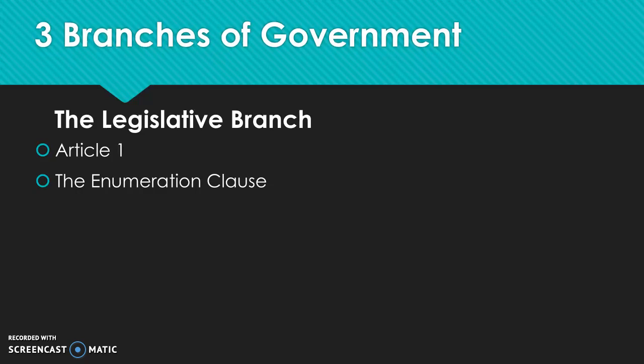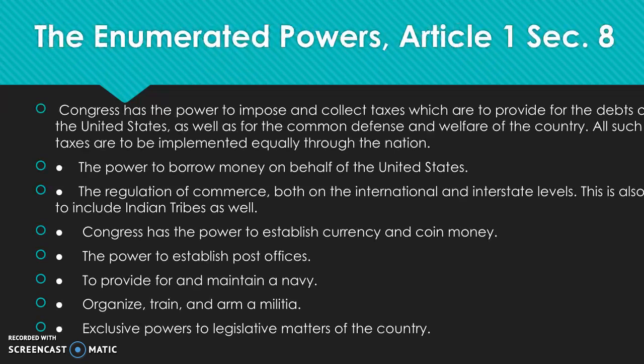We're actually going to start with the legislative branch. The legislative branch is described in Article 1 of the Constitution, and the most important piece that tells us the legislative branch's role is what's called the Enumeration Clause. Article 1, Section 8 of the Constitution gives us the Enumeration Clause, which means it's enumerating — numbering — powers that are specifically granted to Congress.